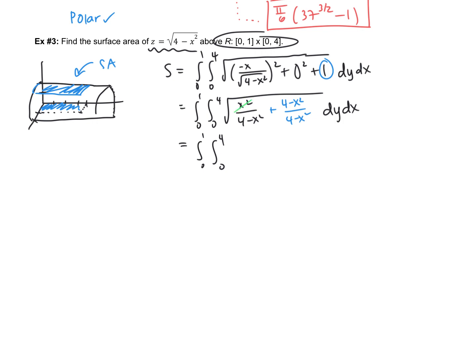What I'm going to do is simplify this root a little bit. So I end up with x²/(4 - x²). I'm going to find a common denominator with this 1, so that becomes (4 - x²)/(4 - x²). So then if I keep going, I get this to be 0 to 1, 0 to 4. I notice these x-squareds are going to subtract out. So the square root of 4 ends up being 2. So I have 2/√(4 - x²) dy dx. When I integrate with respect to y, I'm just going to end up with another 4. So this gives me 0 to 1 of 8/√(4 - x²) dx.